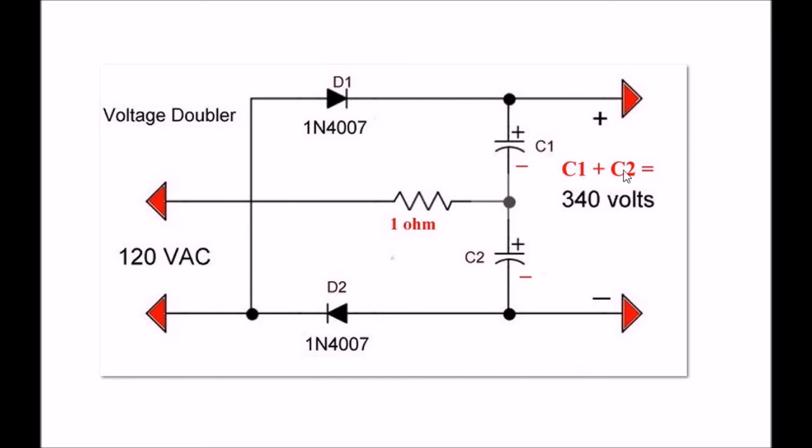The voltage on C1 plus C2 equals 340 volts. And that's all there is to it. You're just charging up two half-wave rectifier filtering setups, and then the voltages add.